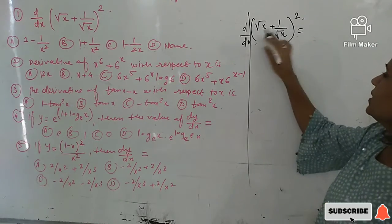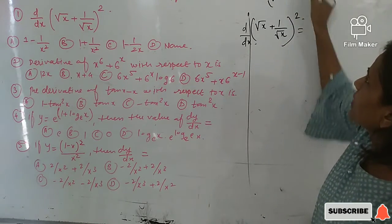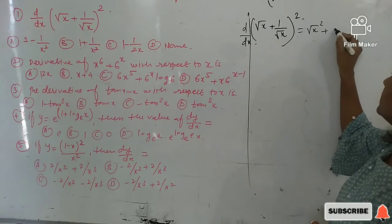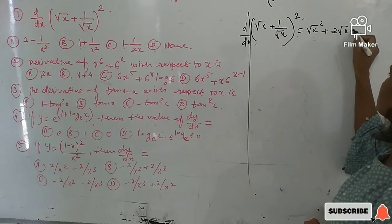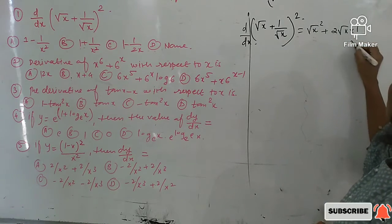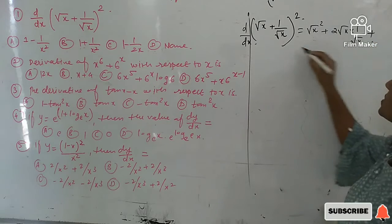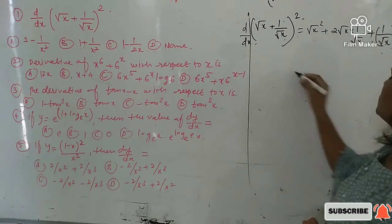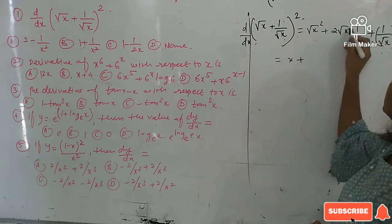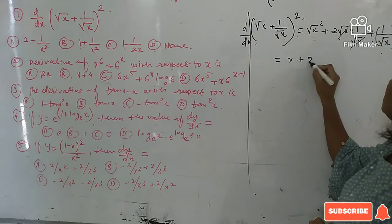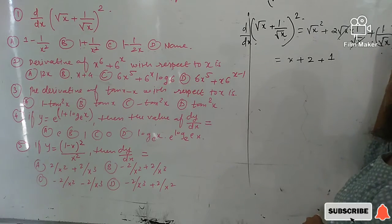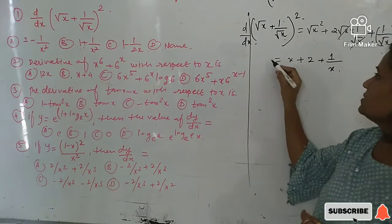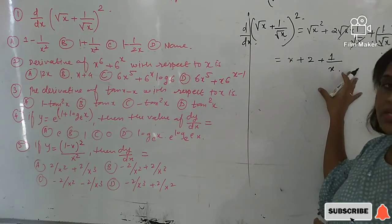Expand this using the (a + b)² identity. The expansion is (√x)² + 2·√x·(1/√x) + (1/√x)². After simplification: √x and √x cancel, giving x + 2, and (1/√x)² = 1/x. So the simplified expression is x + 2 + 1/x.